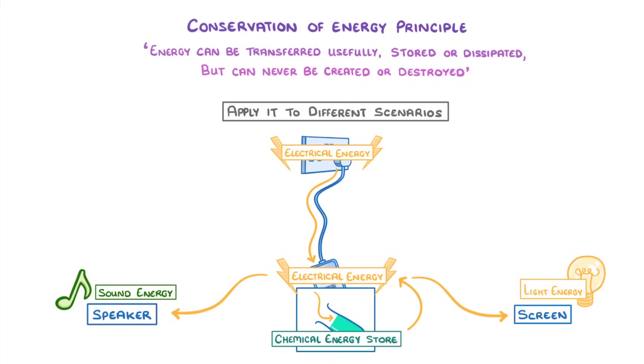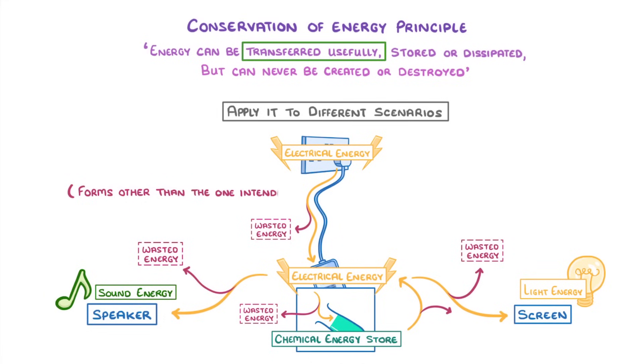Ideally, every time that energy is transferred, it would all be transferred usefully into the desired store that you want it to go to. In reality though, some of it is going to be dissipated as wasted energy, which just means to forms other than the one that we intended.